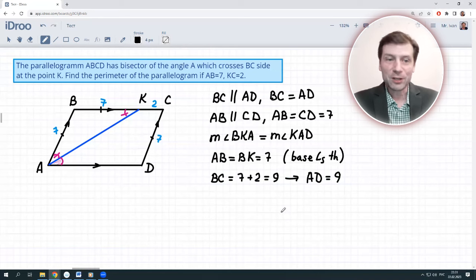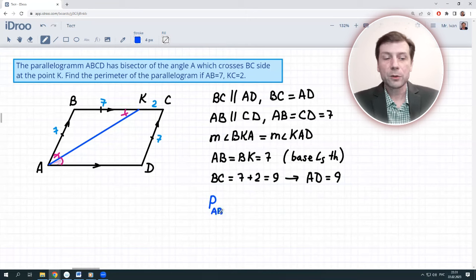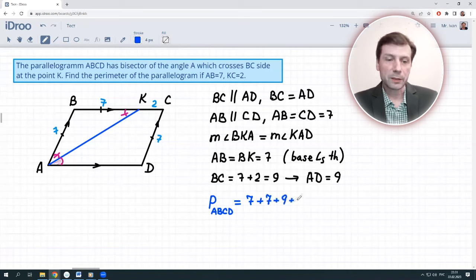The only thing we have to do is find the perimeter by adding them up. The perimeter of ABCD equals 7 plus 7 plus 9 plus 9, which is 14 plus 18, and equals 32.